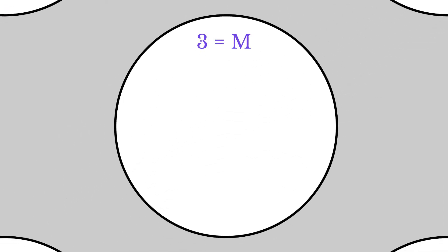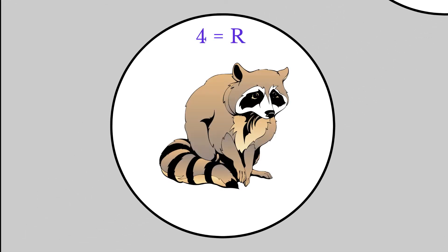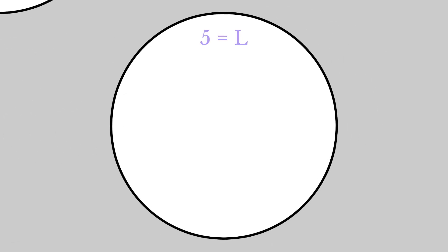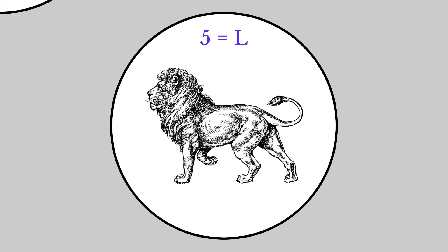Number three is replaced by m sounds. We have a manatee. Number four is replaced by r sounds. We'll use a raccoon. Number five by l sounds. Let's use a lion.